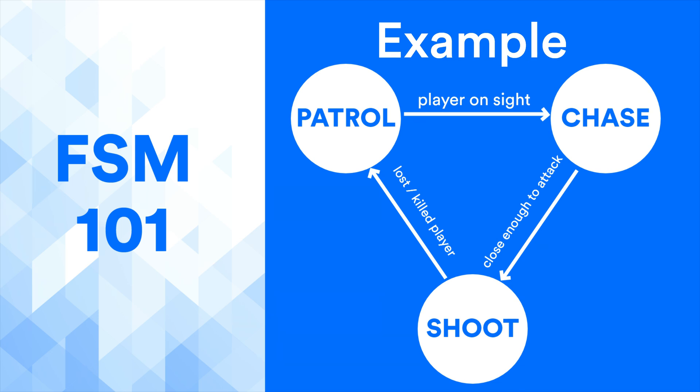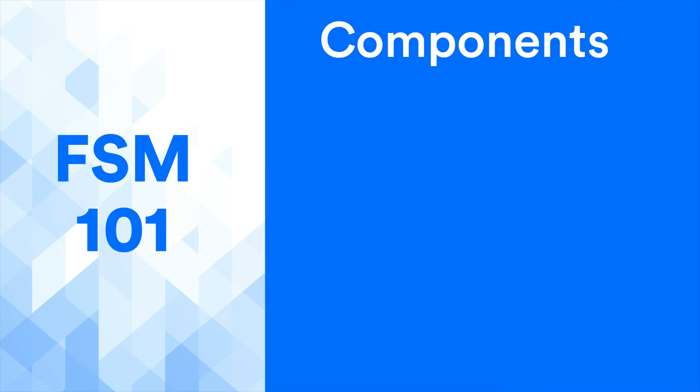There are basically four components in a simple FSM. The first component is a state. The state is the component that defines a set of distinct states that a game entity or an NPC can choose from. Example: patrol, chase, and shoot.